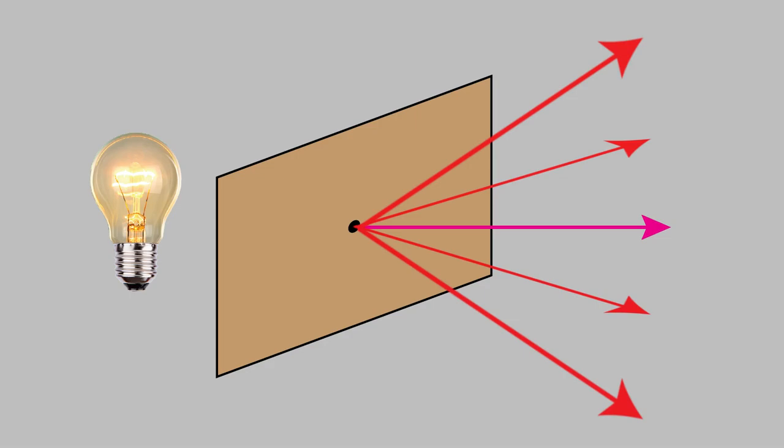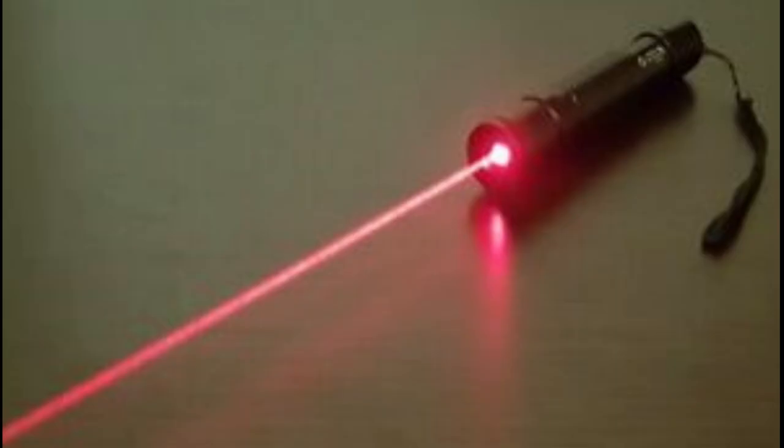On the other hand, a laser stays collimated over a very, very long distance. That means that the light from a laser actually can't be seen from the sides. There's no light coming out of the light beam at an angle.